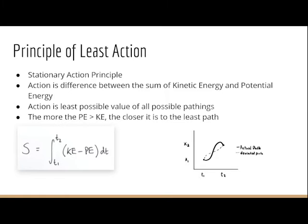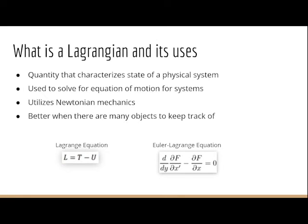Now that we know that, I want to talk about Lagrangians and its uses. A Lagrangian is a quantity that characterizes the state of a physical system. It's used to solve for equations of motions for systems, more complicated systems, and utilizes Newtonian mechanics.